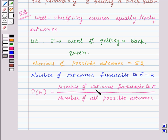Now here number of outcomes favorable to E are 2. So this will be equal to 2 upon number of all possible outcomes that is 52. And this will be equal to 1 upon 26.